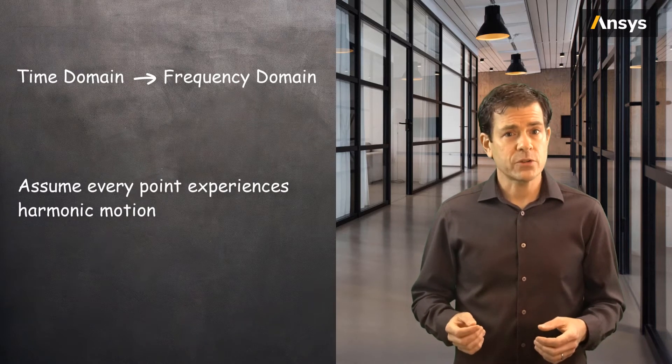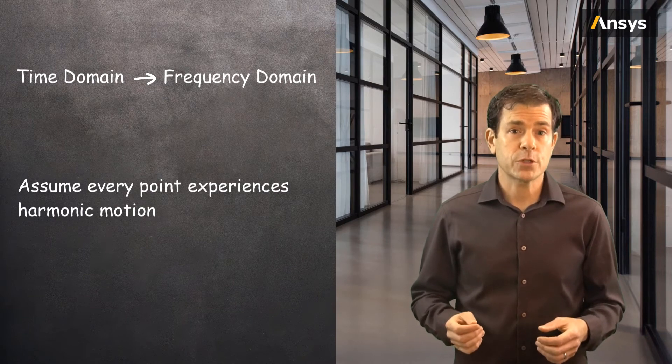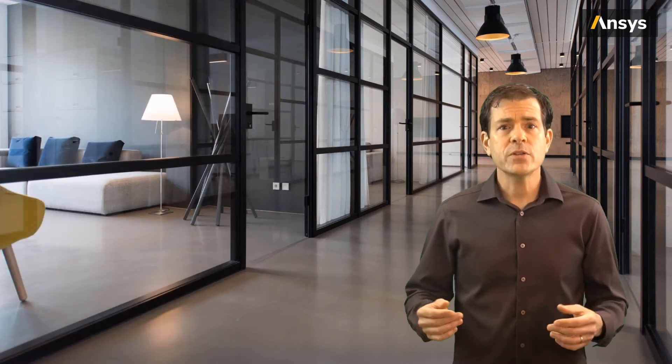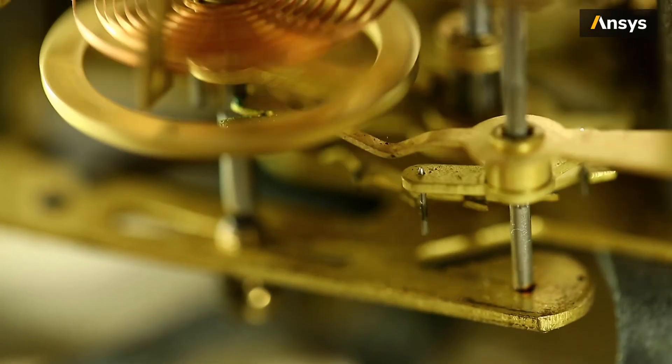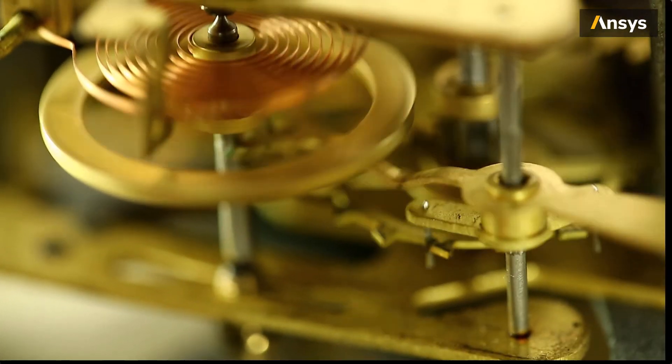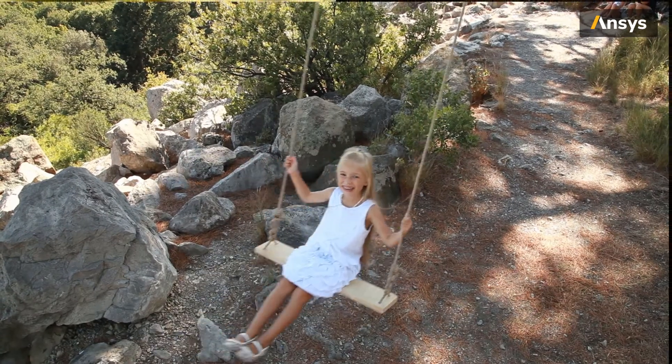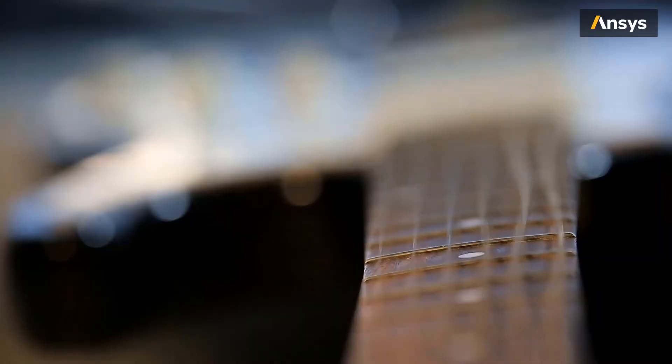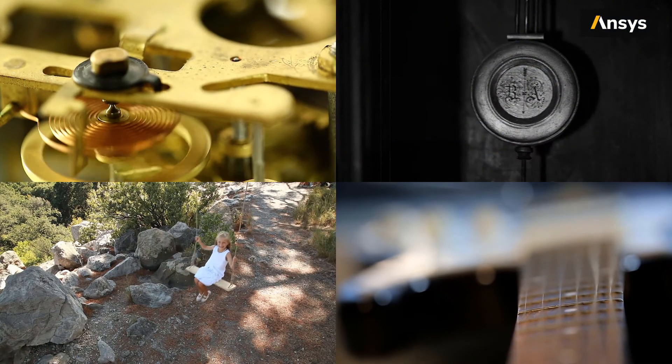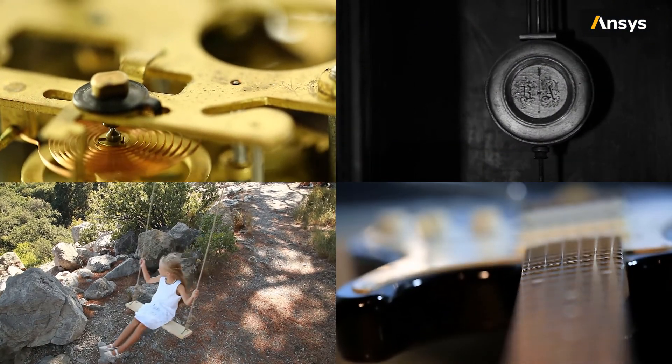Let's assume that every point of the structure is experiencing harmonic motion. Now, what does harmonic motion look like? Here are some everyday examples from the inside workings of a mechanical watch, to the pendulum on a clock, the swinging of a child, the vibration of a string on a musical instrument, or even a more complex example of a seed separator.